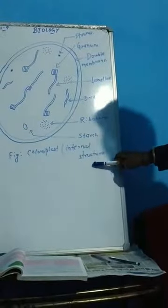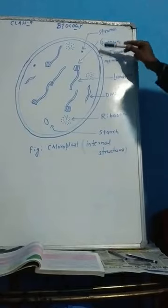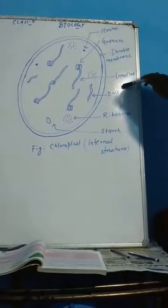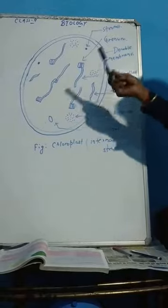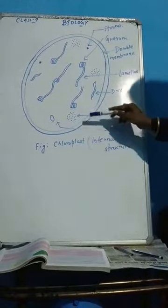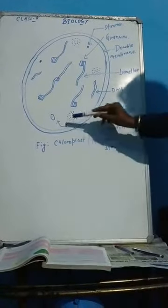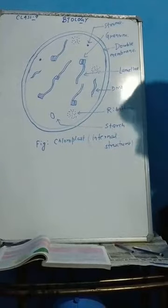Chloroplast is the internal structure. You can see here. There is a double-membrane structure. There is stroma, granum, and lamellae. There is circular DNA and ribosomal DNA. There is also a group of ribosomes. And here is starch in granular form.